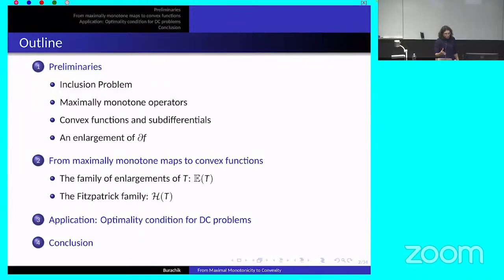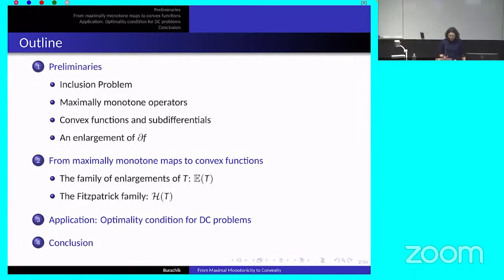I will start with the preliminaries, giving a description of all the ingredients of this talk. The main ingredient is convex functions and how you go from convex functions to maximally monotone operators. Imagine a river: on one side are the convex functions, on the other side are the maximally monotone operators, and the idea is how to cross.